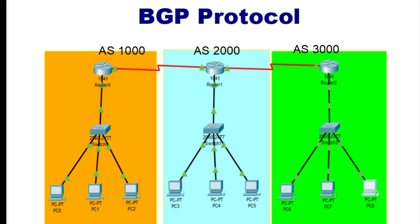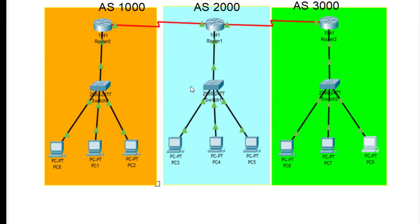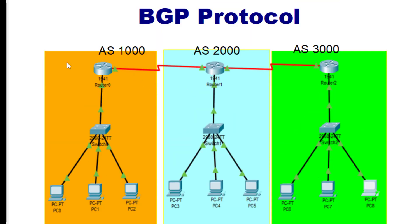So this is the topology. I have given different colors so that we can see we actually have five networks. This orange area is AS 1000, and this router is an autonomous system. Here we have AS 2000 and autonomous system 3000. So there are three autonomous systems.